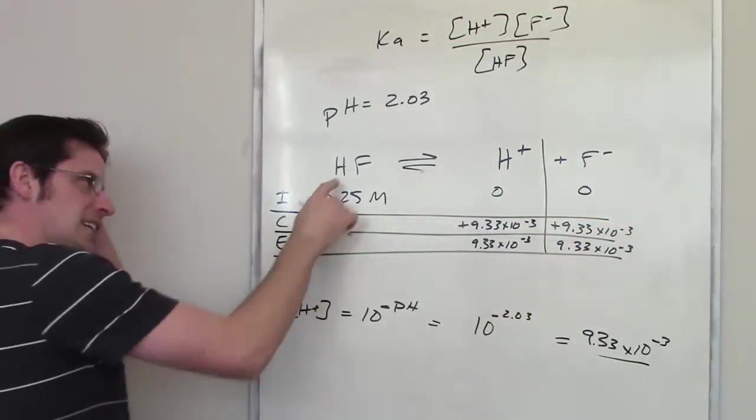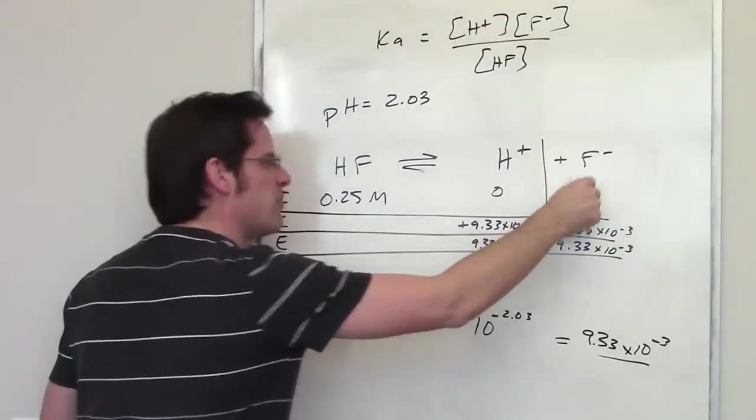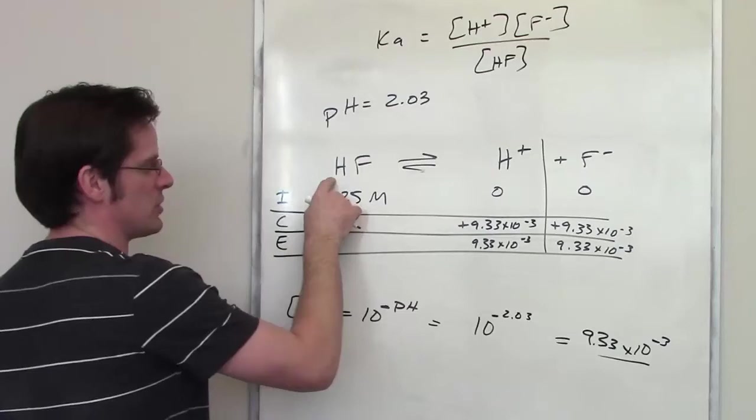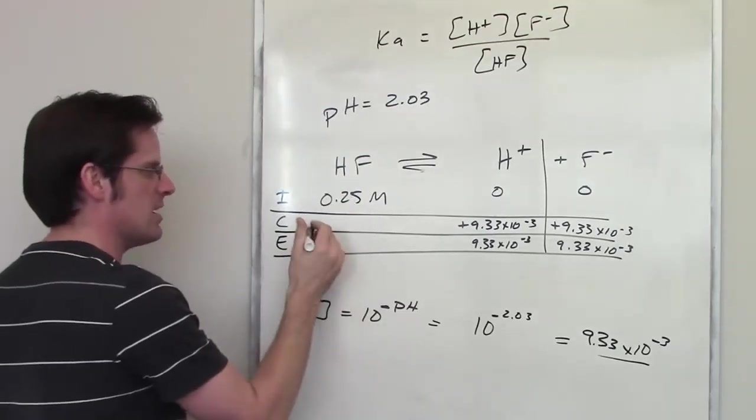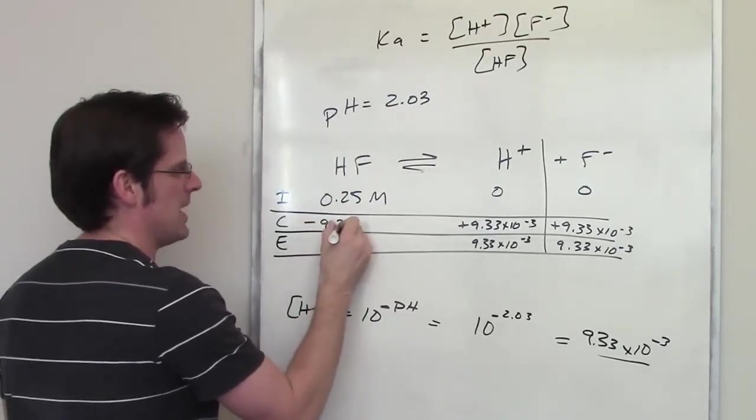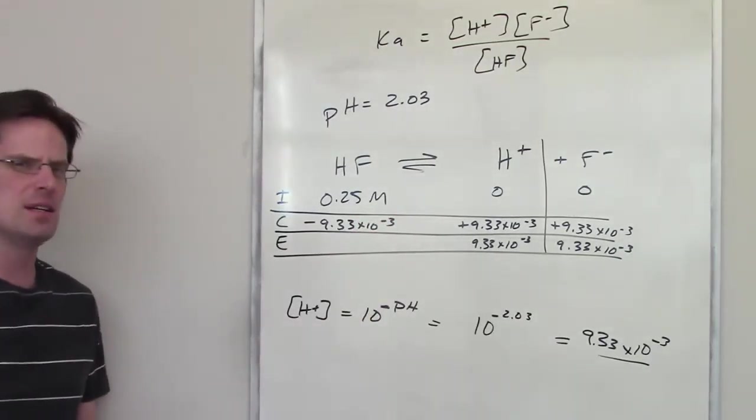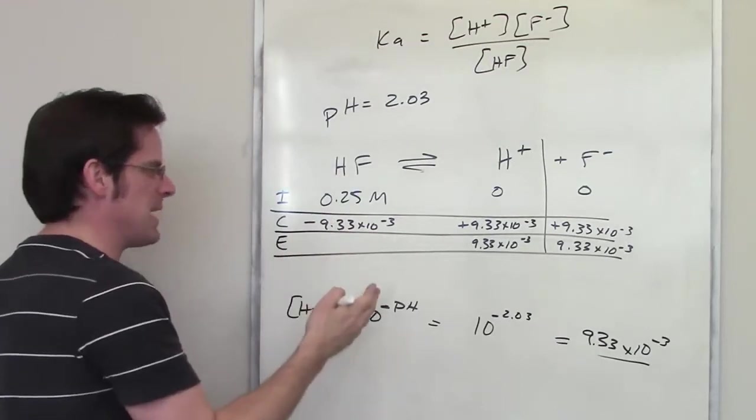Now, HF to H+ to F-, stoichiometric ratios one to one to one, which means that the change in concentration of HF, right here, had to be minus 9.33 times 10 to the negative third. Does that make sense? So what is the equilibrium concentration of HF end up being?